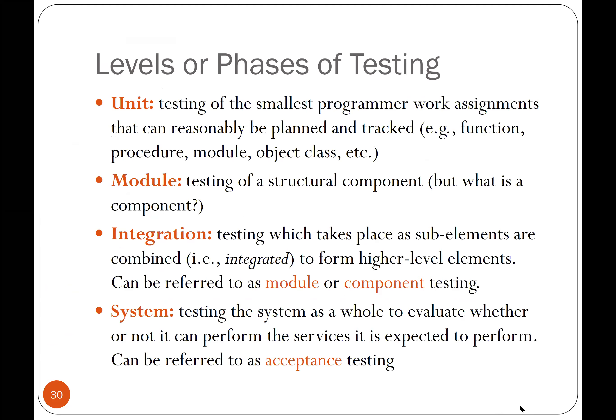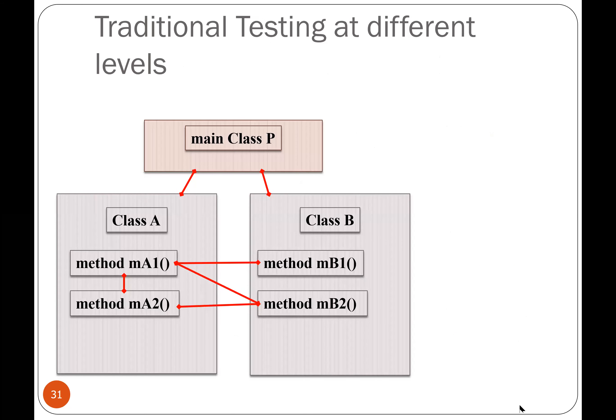Now let's talk about the different levels of testing — high level, lower level, and detail level — which we covered lightly when discussing the V-model in the first chapter. The smallest level is what we call the unit level, which tends to be something like a method, or at most a class — sometimes even as low as a line of code. There's no strict mathematical definition of how big a unit is; it's basically the smallest concept you don't want to break down further.